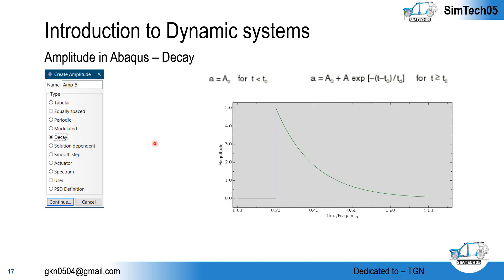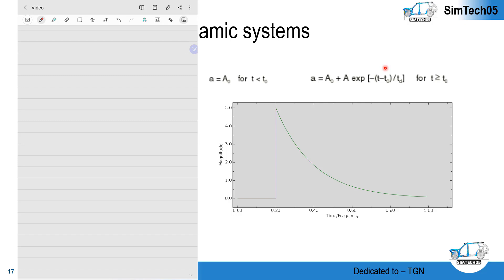It will exponentially decrease but become zero only after infinite time. Here, the condition of the decay function is: before t equals t₀, amplitude A becomes a₀. Since a₀ is defined as zero here, it starts at zero. It then goes to the maximum amplitude A and decays as per the formula. The formula is: A = a₀ + A·e^(-(t - t₀)/td), where td is the decay time.